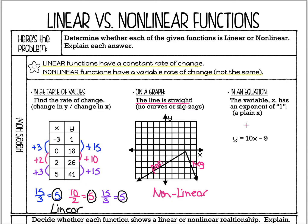For an equation, all you're doing is looking at what exponent is on the X. We look at the variable X and check its exponent — we want it to have an exponent of 1. A plain X really means X to the first power; we just don't bother writing it. So because this is a plain X, or X to the first power, this is linear. If we graphed it, we'd plot the y-intercept at negative 9, then go up 10 and right 1 repeatedly — a constant rate of change.